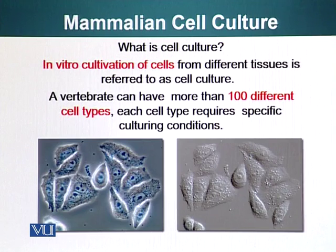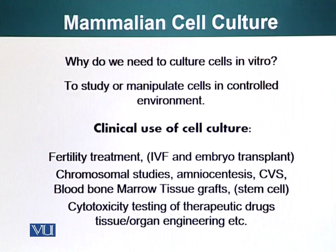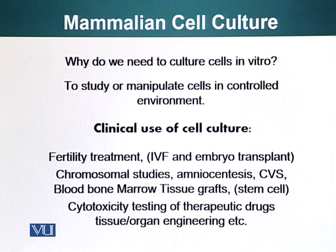Vertebrates, for example, can have more than 100 different cell types. Each cell type generally requires specific culturing conditions. One of the beauties of culturing cells is that you can manipulate the environment of the cells, so you can see how different cells will behave in a specific environment. You can change pH, add different reagents, or add different signaling molecules that we have talked about in theory and see how cells respond to them.